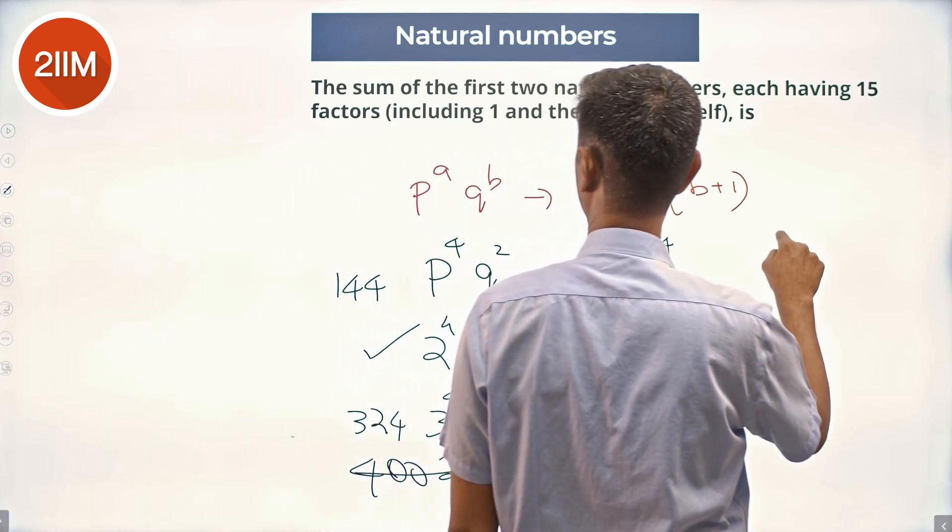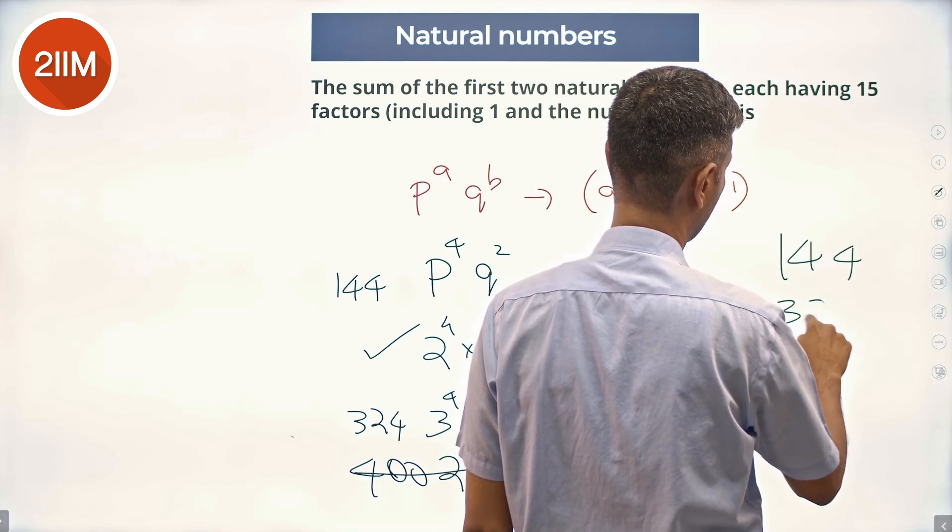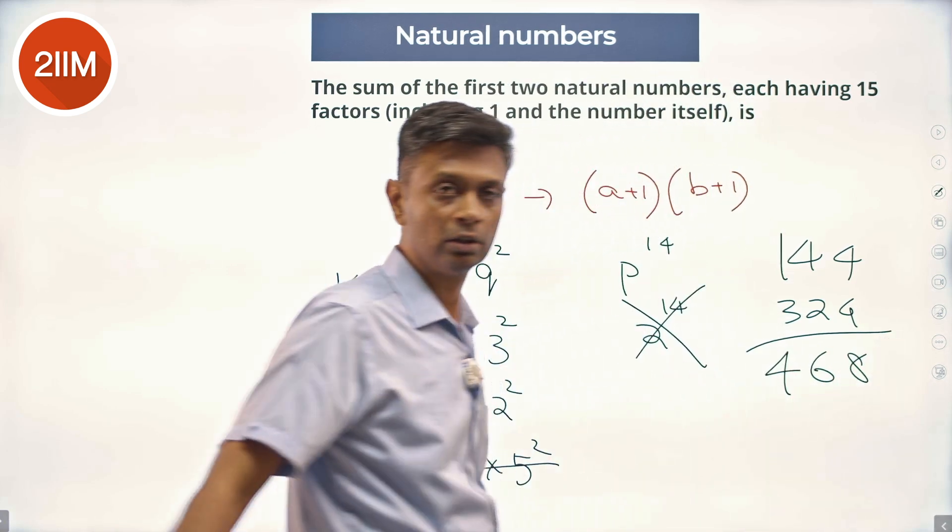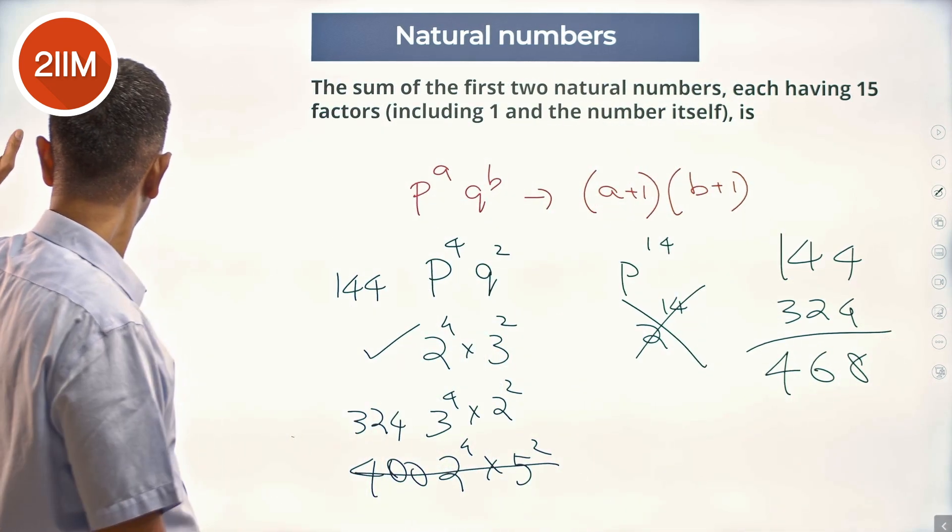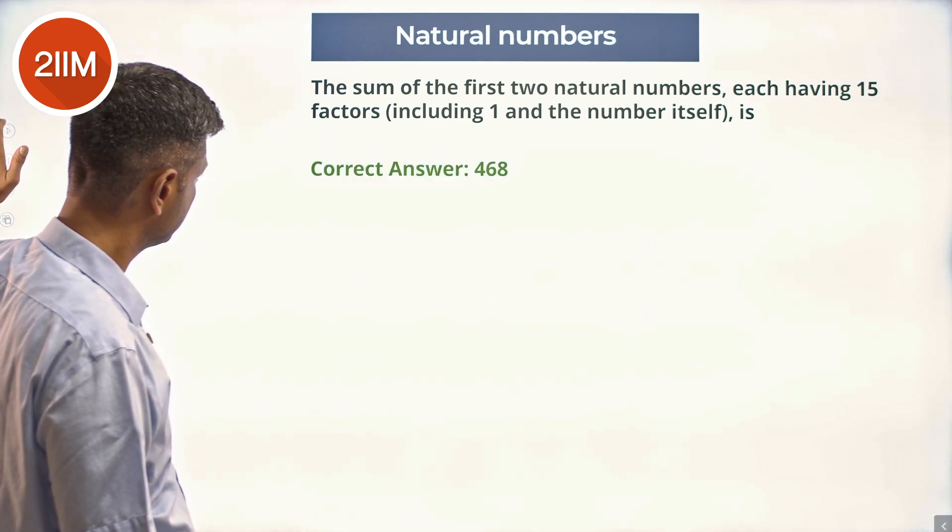So we have to find the sum of the two numbers. 144 plus 324 which is 468. That's the number we are looking for. 468 should be among the choices.